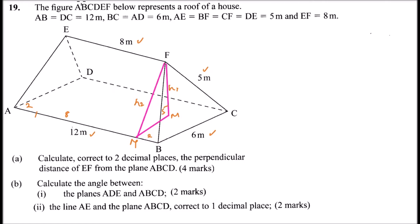This gives us a right-angle triangle, so H2 equals the square root of 5 squared minus 2 squared, which is the square root of 25 minus 4, equals the square root of 21. I'll leave it in that form for now.